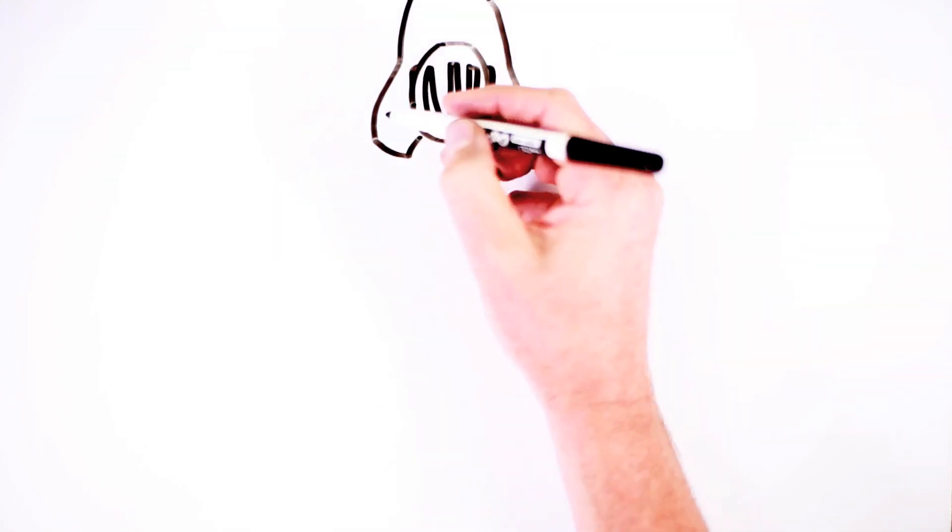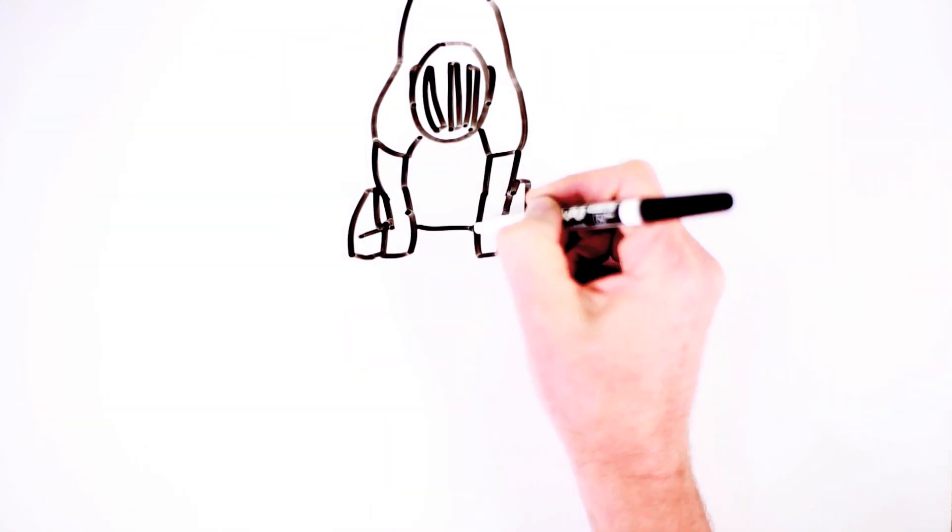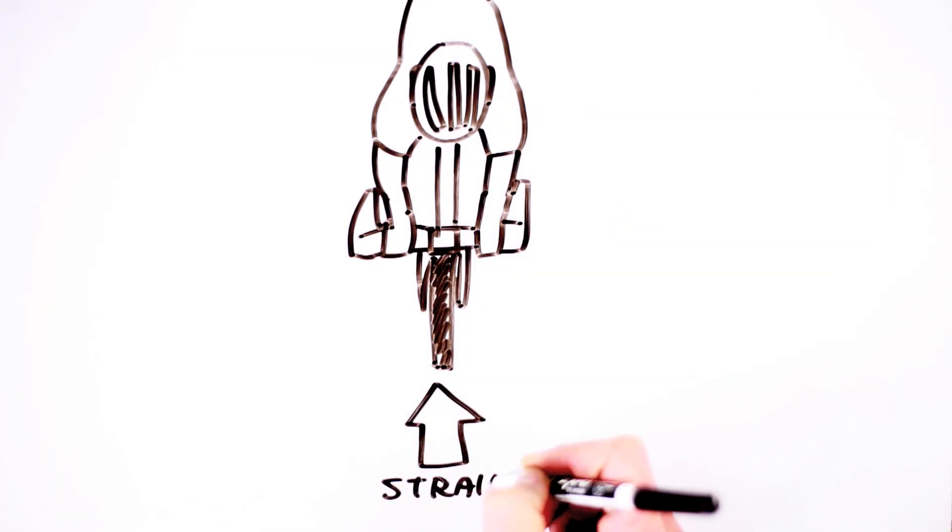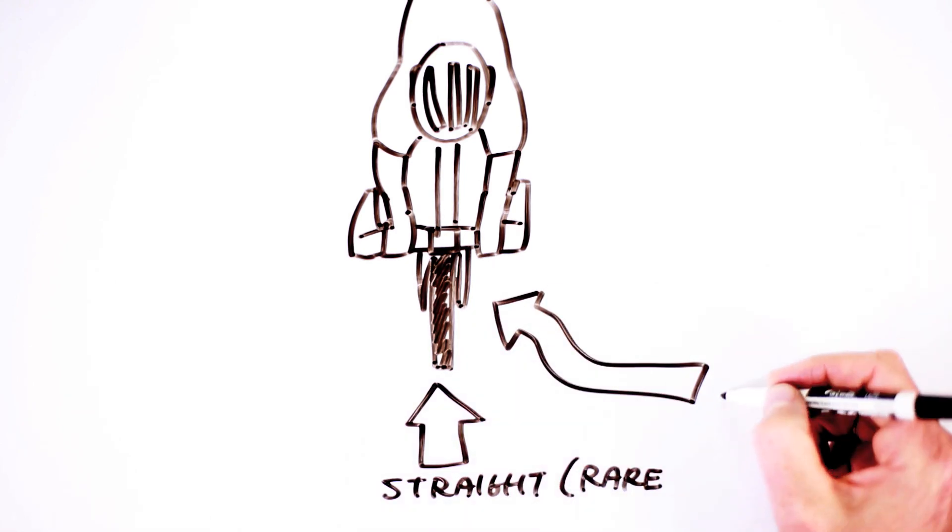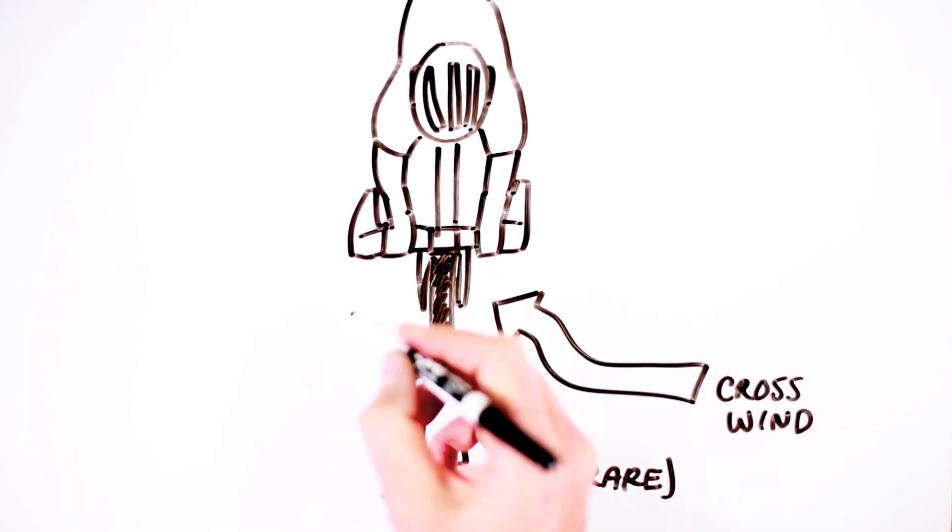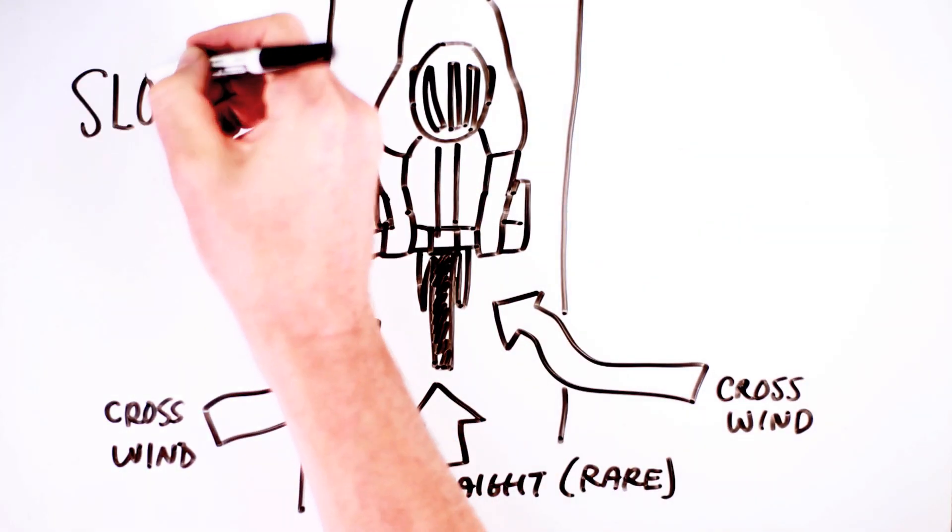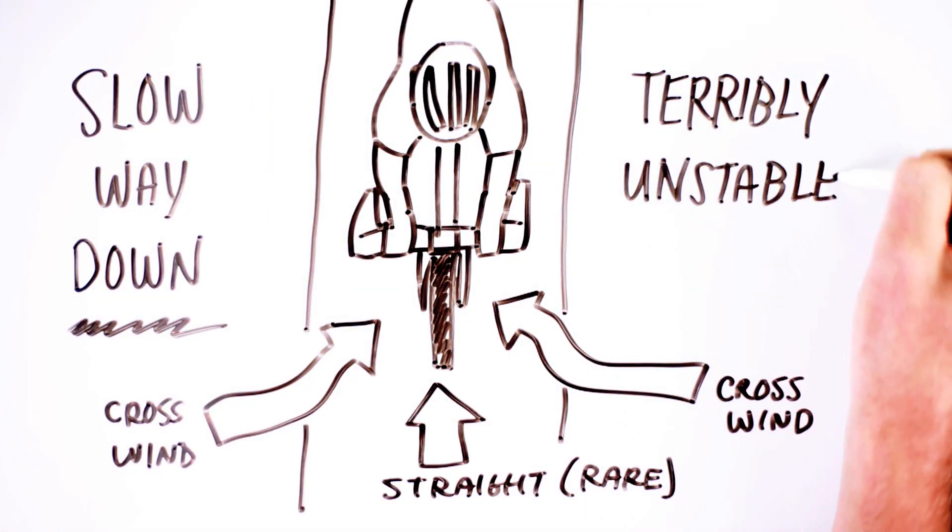Traditional airfoil rim shapes are very aerodynamic when you're battling a straight-on headwind. But straight-on, zero-degree yaw wind is rare in cycling. The wind is constantly changing direction, and two things happen to those classic airfoil shapes in crosswinds: they slow way down and they get terribly unstable.